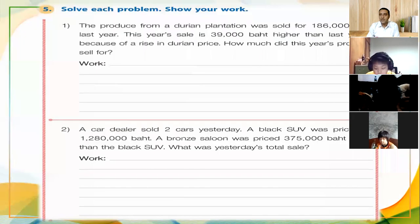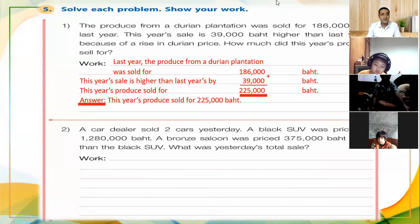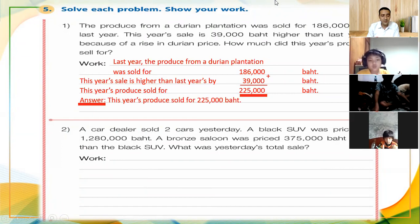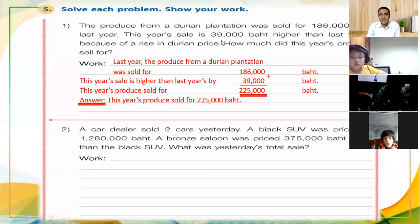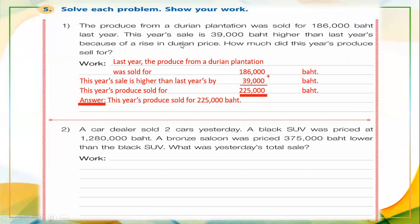Now the last problem. The produce from a durian plantation was sold for one hundred eighty-six thousand baht last year. This year, the sale is thirty-nine thousand baht higher than last year because of a rise in durian price. How much did this year's produce sell for?